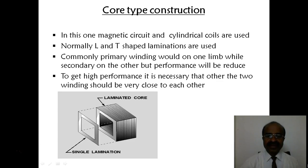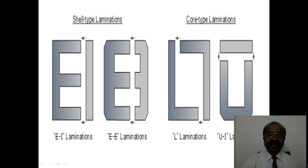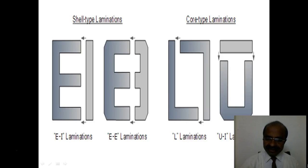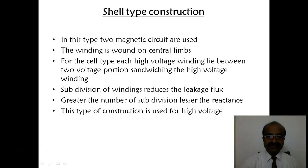The core type of construction is shown in this figure. These are the laminations of different shapes: E, I, L, and U-shaped laminations, as shown in this slide. The shell type of construction is also explained in this slide.